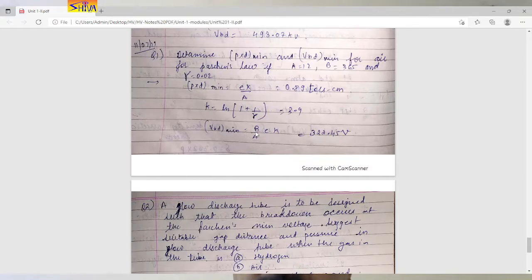Equation is b upon a into e into k. B is 365, a is 12, e you can take from calculator, k is 3.9. So calculation gives the result, it is 322.45 volts.